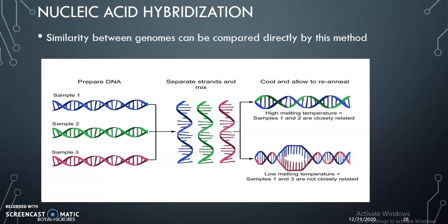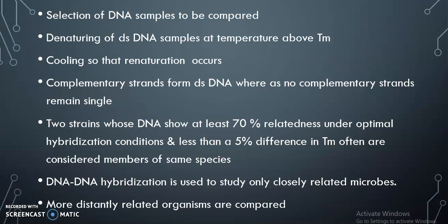Nucleic acid hybridization: similarity between genomes can be compared directly by this method. Three samples of DNA are separated by melting, then cooled and re-natured. If the DNA strands of the samples are closely related, they form hybrids; if distantly or not related, they do not. DNA is denatured at temperatures above the melting temperature, then cooling and re-naturation occurs. Complementary strands form double-stranded DNA while non-complementary strands remain single. Two strains whose DNA shows at least 70% relatedness under optimal hybridization conditions and less than a 5% difference in melting temperature are often considered members of the same species.